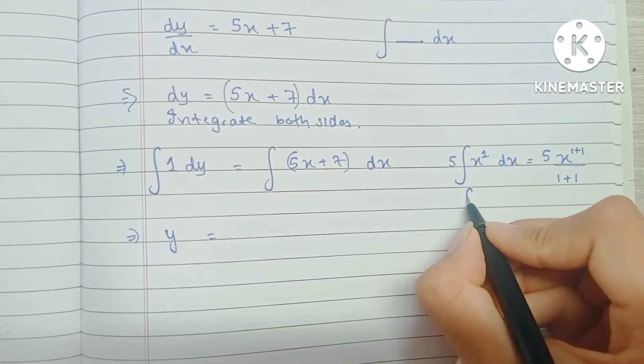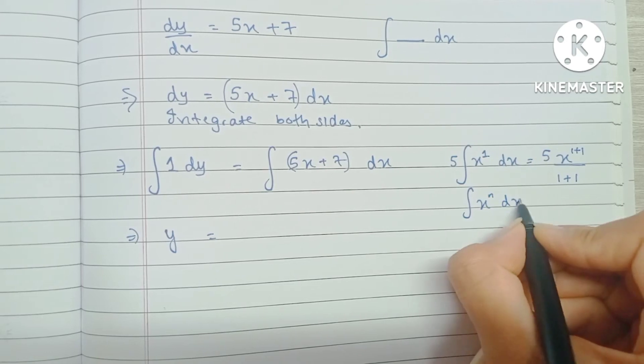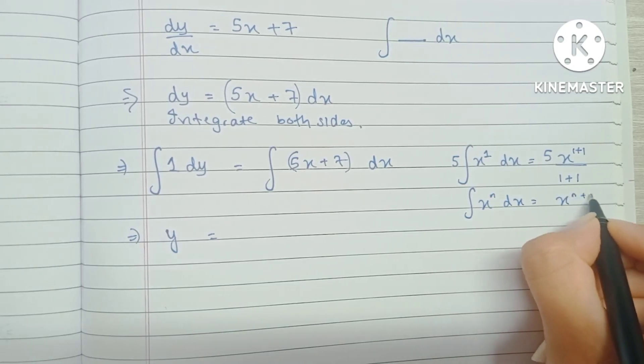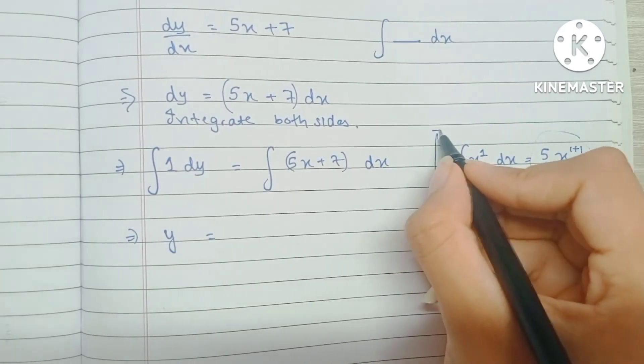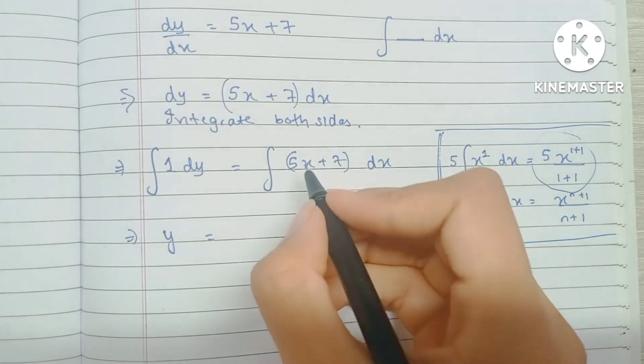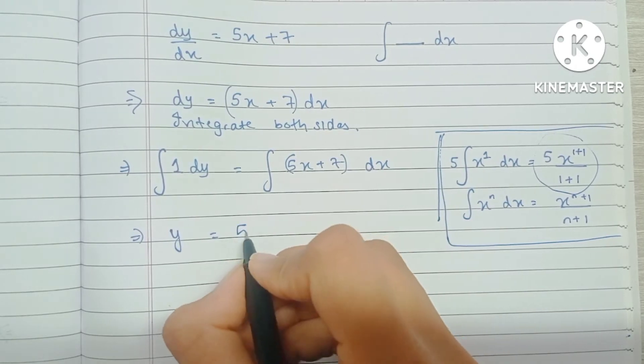Because the integration of x raised to n is equal to x raised to n plus 1 upon n plus 1. So that's exactly what we're doing right over here. Here the integration becomes 5x squared upon 2.